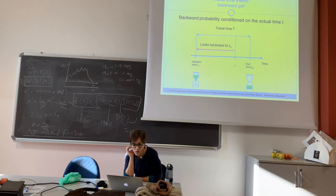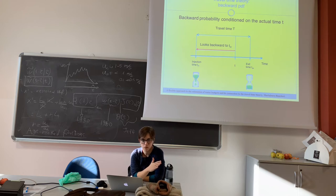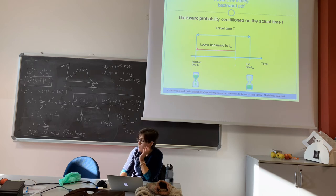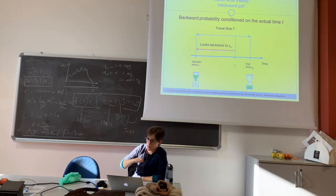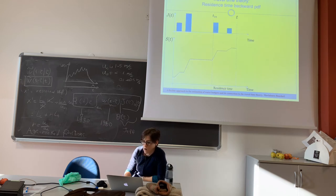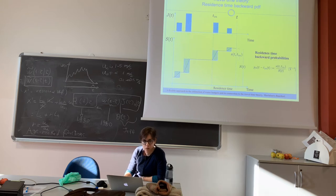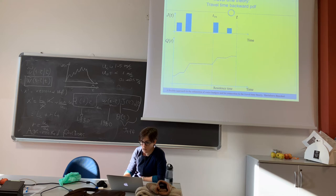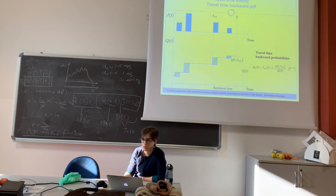Now we can define actually two different PDFs, so probability distributions. One is the backward probability, so you are at time T, we are looking backward to what happened in your control volume. That's why it is conditioned to time T. The residence time backward probability is defined as the ratio between the age-ranked storage and the total storage at time T. And in the same time we can define the travel time backward PDF, which is the ratio between the age-ranked discharge and the total discharge at time T.